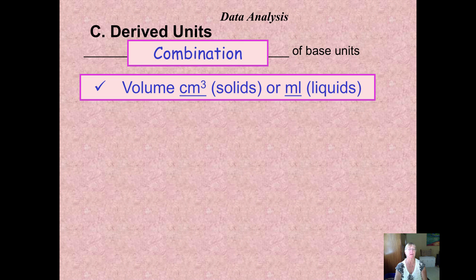For example, you can measure the volume of a solid in cubic centimeters. Length times width times height, and that's a hundredth of a meter, but you have to multiply them by each other.